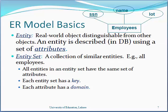What is an entity? A real world object distinguishable from other objects. An entity is described in a database using a set of attributes. An entity is a person, place, thing, or event for which data is collected and maintained. For example, a library system may contain data about entities like book and member, and a college system may include entities like student, teacher, and class. An entity is represented by a rectangle.